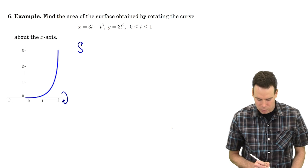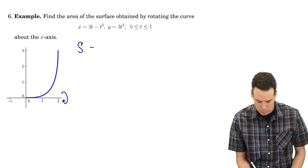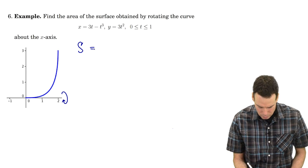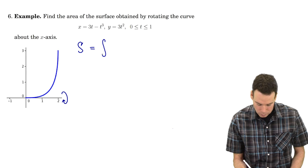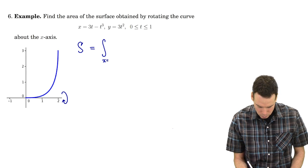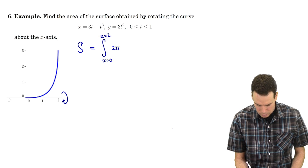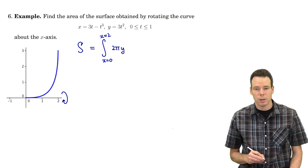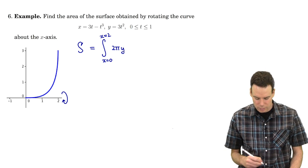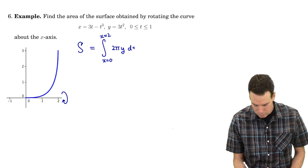Surface area we've been denoting by capital S. What is the area of the surface? Well it's the integral from x equals 0 to x equals 2, 2π times the y value along the curve, because we're revolving it around the x-axis, times the arc length differential.